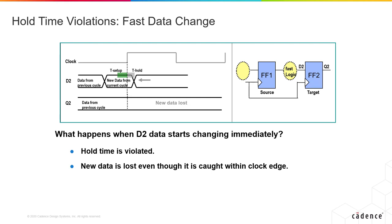Therefore, the hold checks are done at the same edge as the launch edge, rather than at the capture edge like in the case of a setup check. If the data doesn't change faster than the hold check, then it most likely will be safely captured into the flop, unless there is a huge skew between the flops. This is why it is important to invest effort into building well-balanced clock trees.